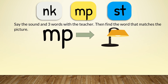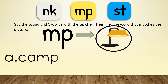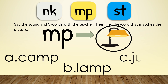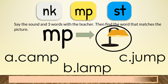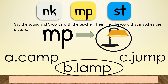Look at the picture. What word matches the picture? A — camp; B — lamp; C — jump. The correct answer is lamp.